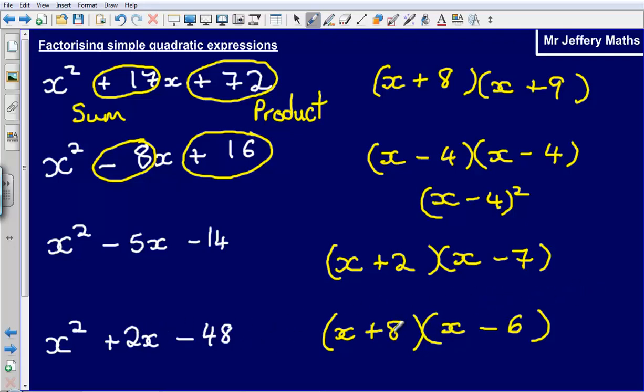Now, spotting the two numbers that work for this, what I suggest that you do is you start with the number on the end. Because there are only a finite number of ways that you can multiply two numbers together to make minus 48. Whereas if you're looking at the sum, there are an infinite number of ways that you can make plus 2. So start with the number on the end.